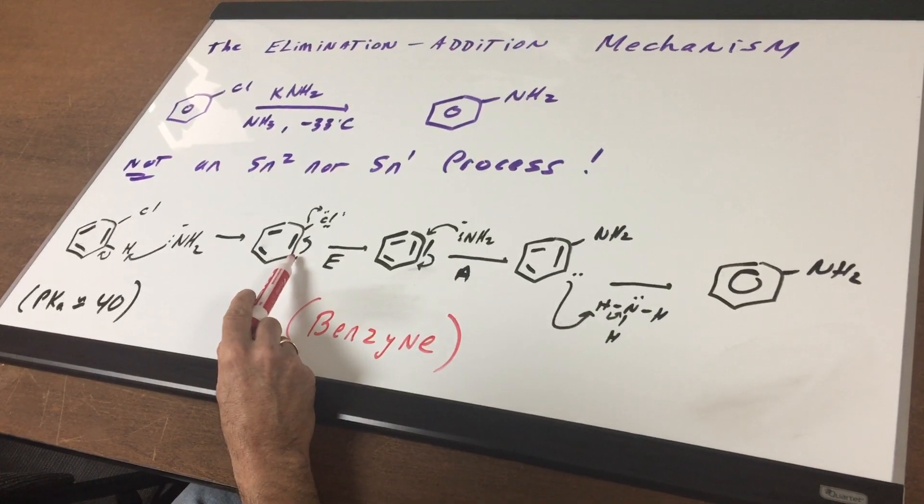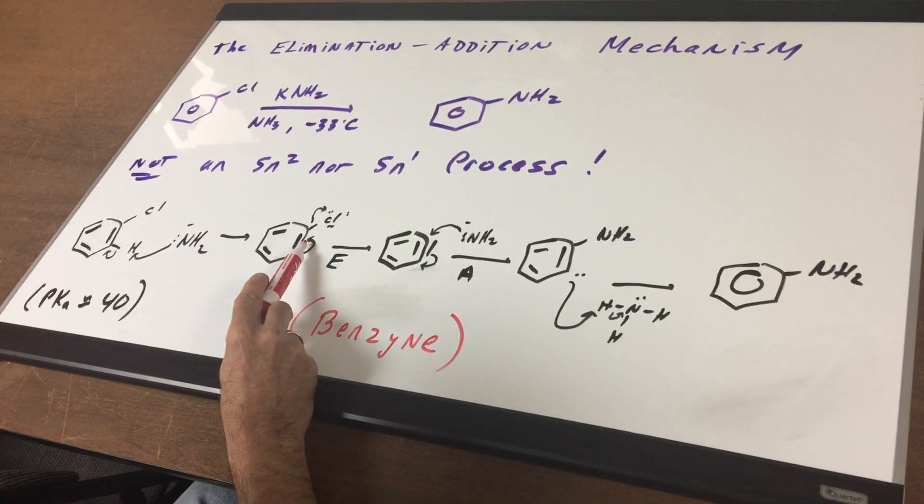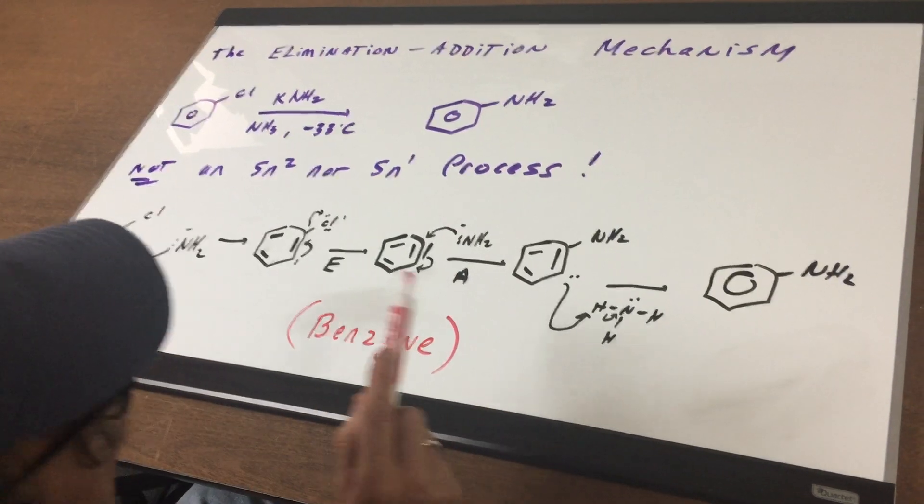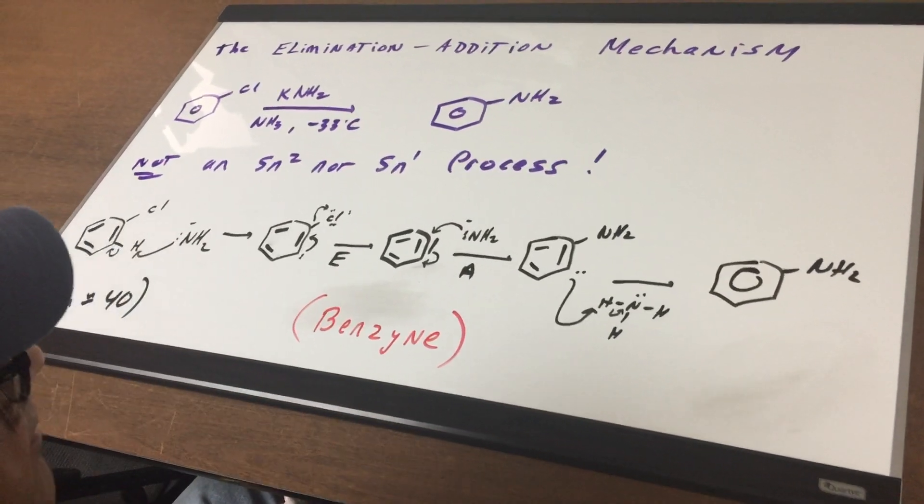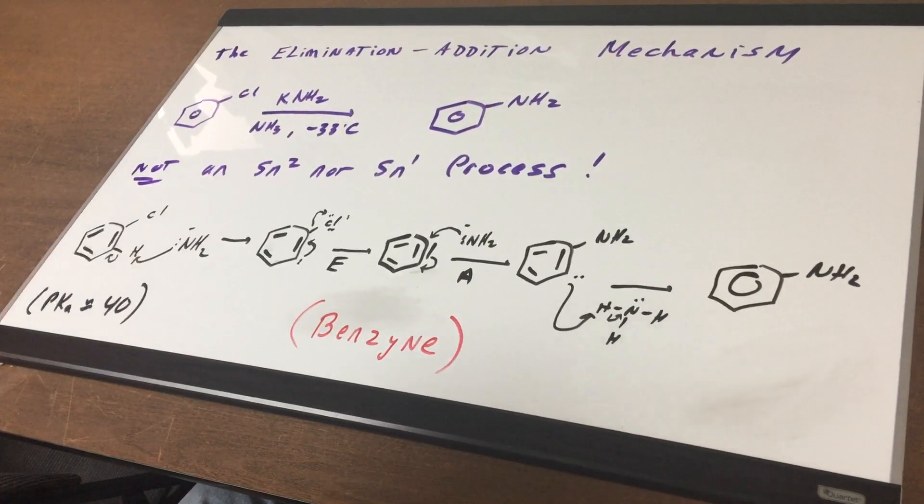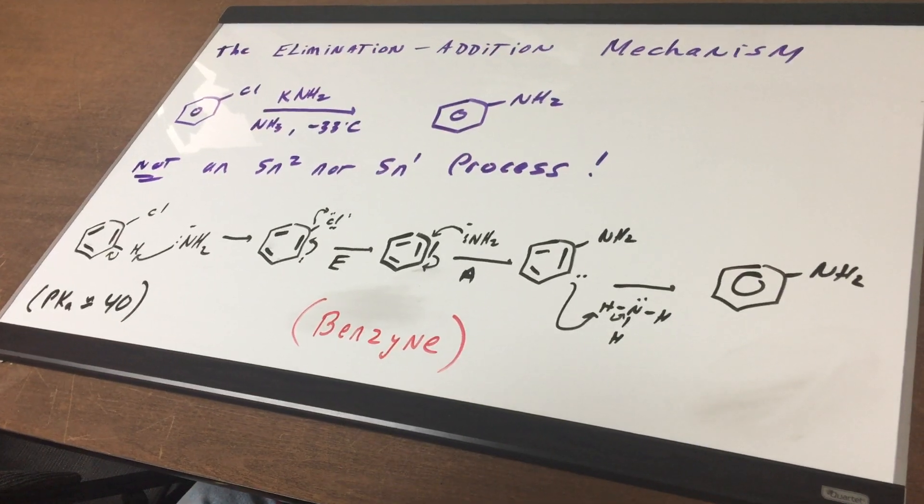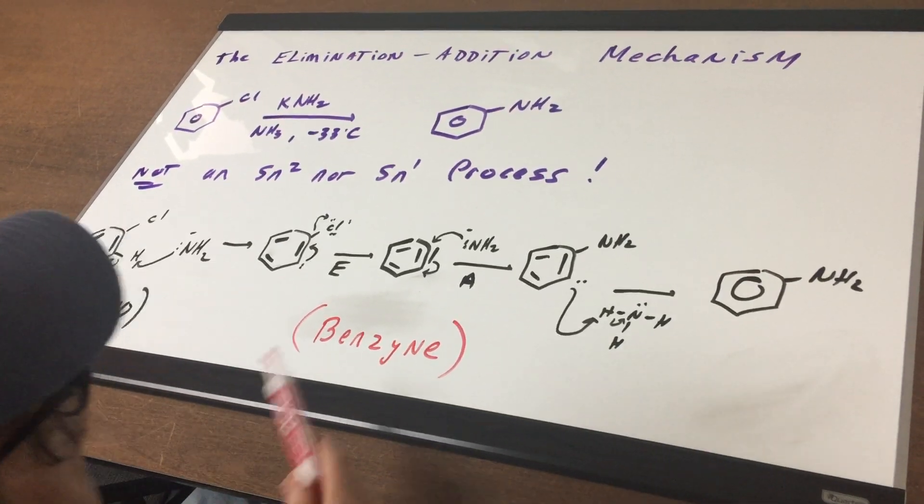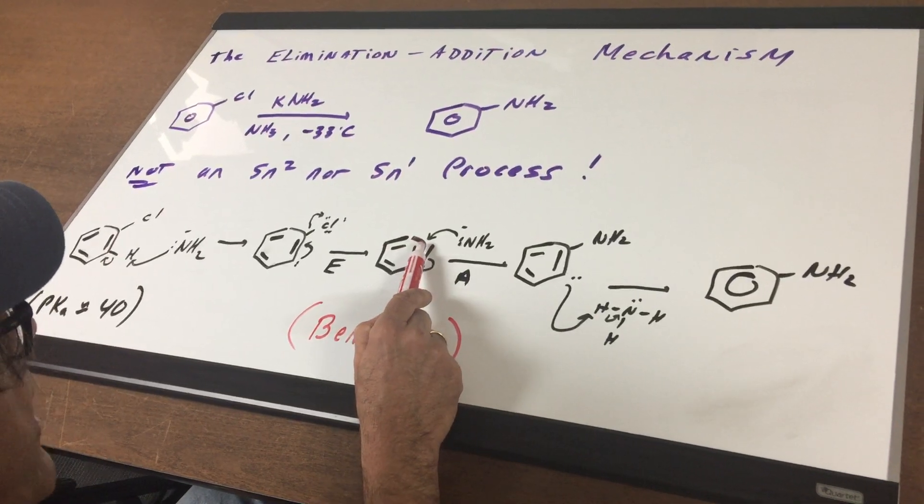Now, here's the elimination step. You're not going to like this. Chlorine can leave and this bond can move down and we form a very, very unstable intermediate. And boy, are these bonds twisted. That intermediate is known as benzyne. Now, this benzyne, if you looked here, can be hit by an incoming nucleophile at this carbon or this carbon.